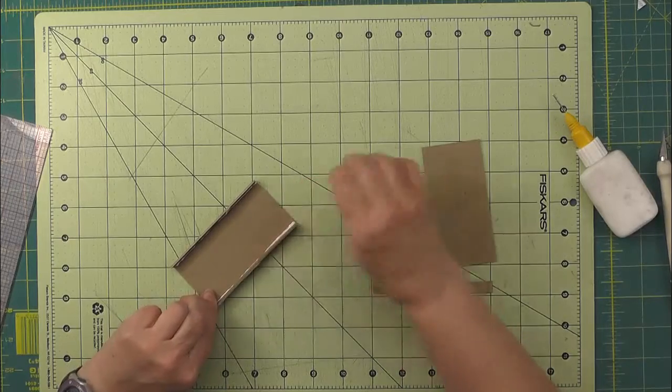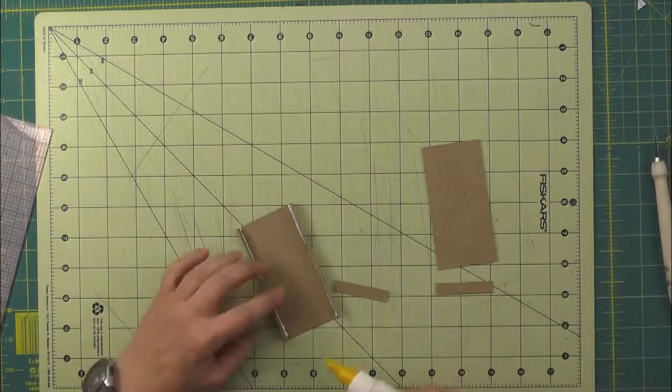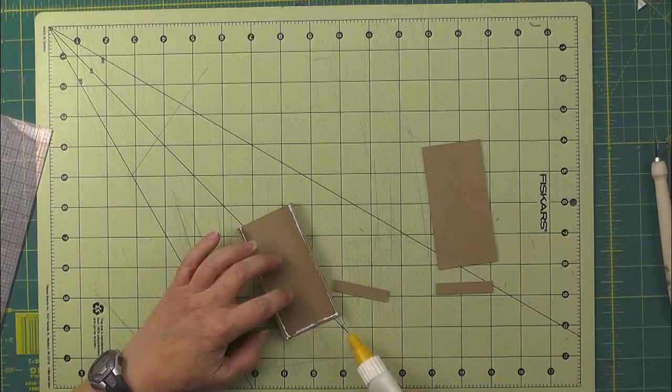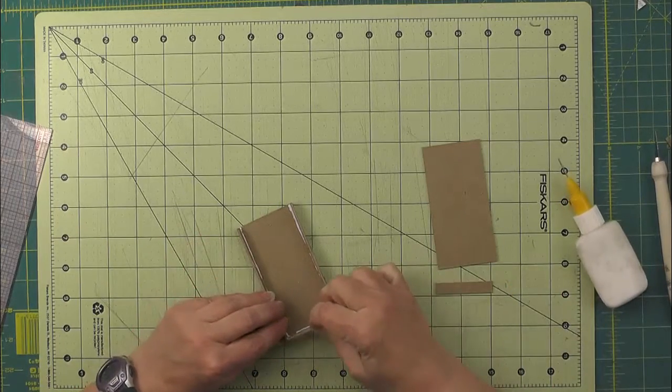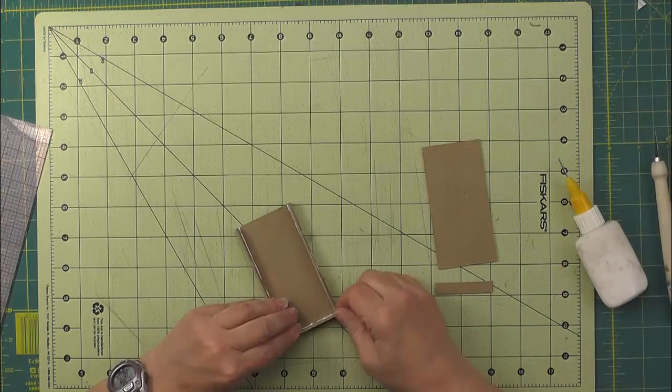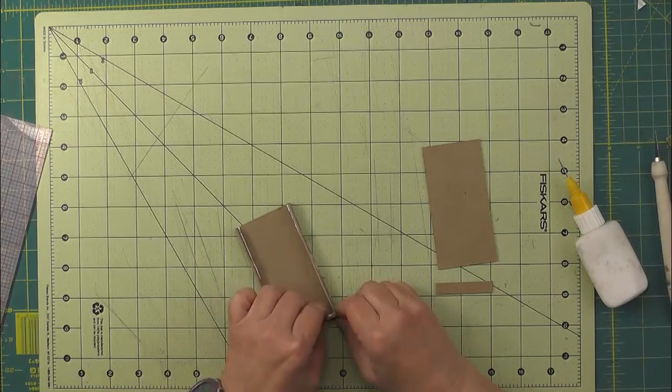So once you get all four of your sides put together, just let this set up and dry, and then go ahead and glue the top piece.